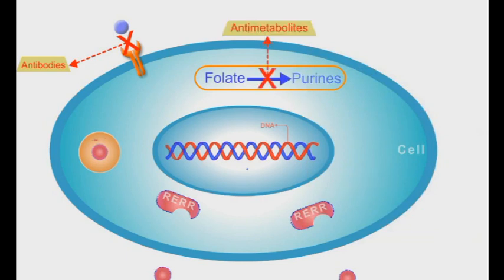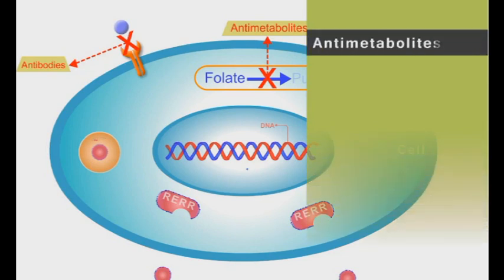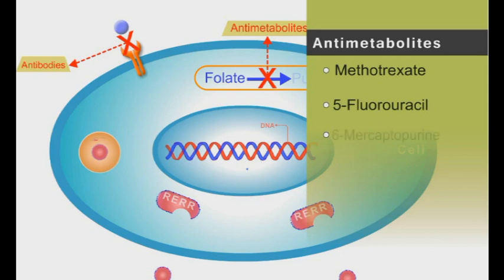The antimetabolites group interferes with synthesis and metabolism of essential components for nucleic acid synthesis and proliferation. Antimetabolites group includes methotrexate, 5-fluorouracil, and mercaptopurine.